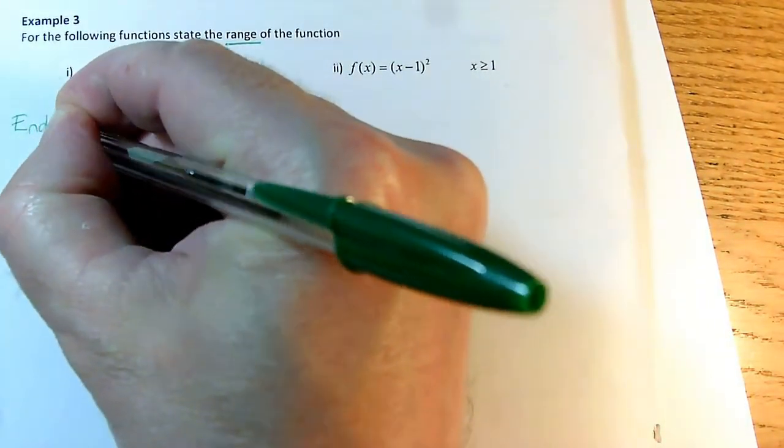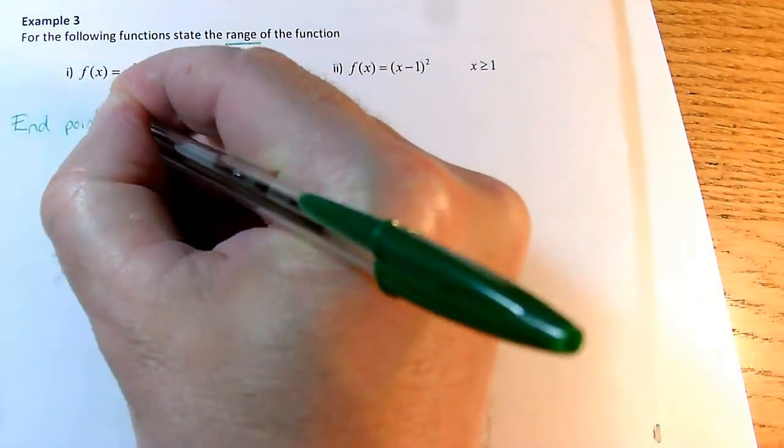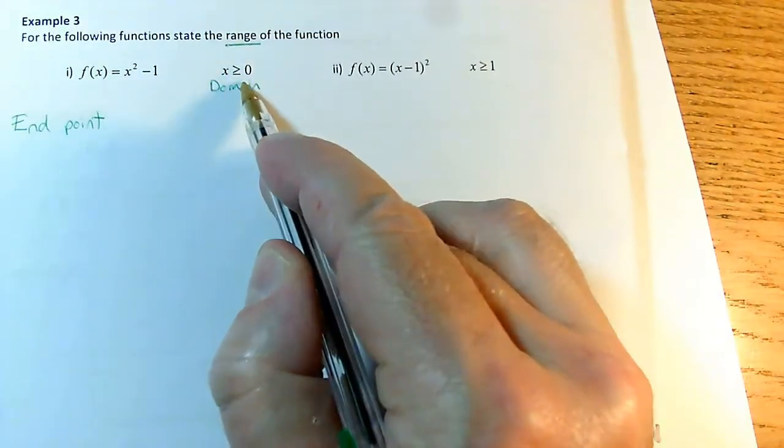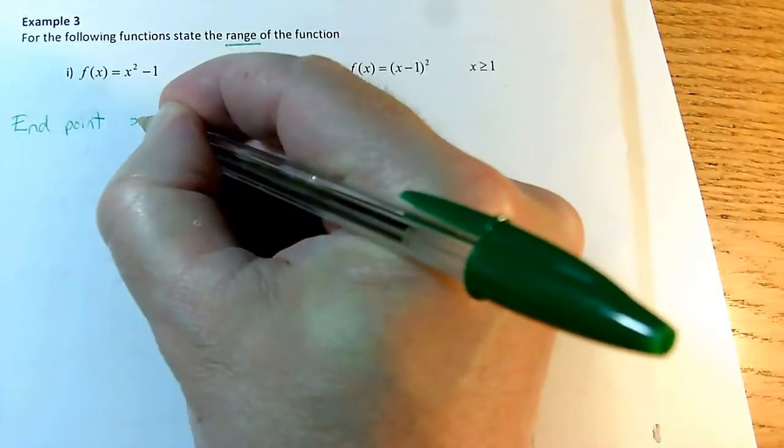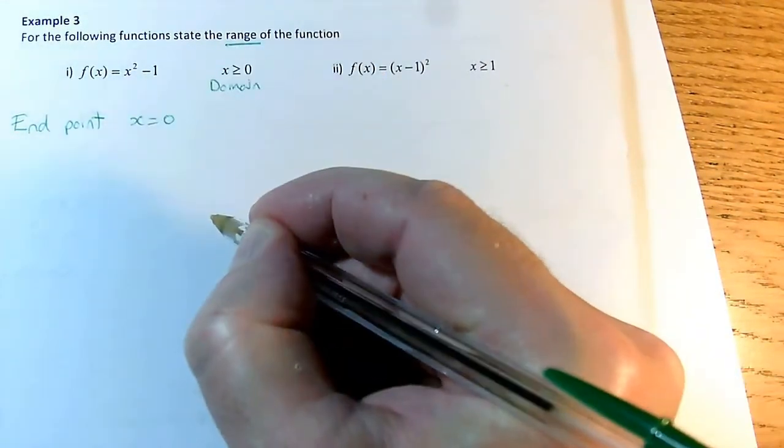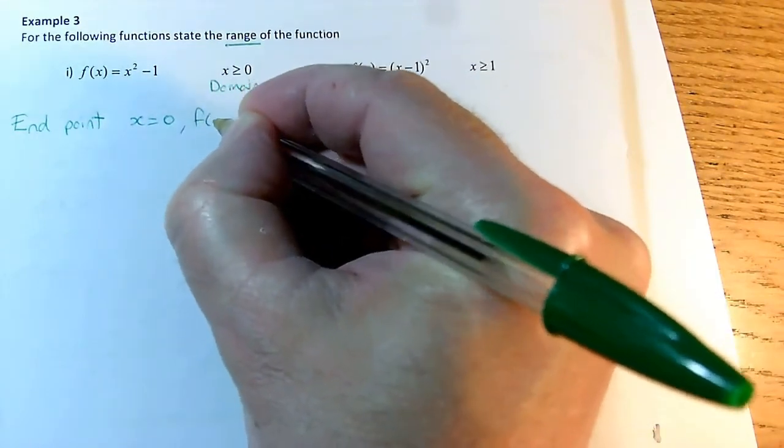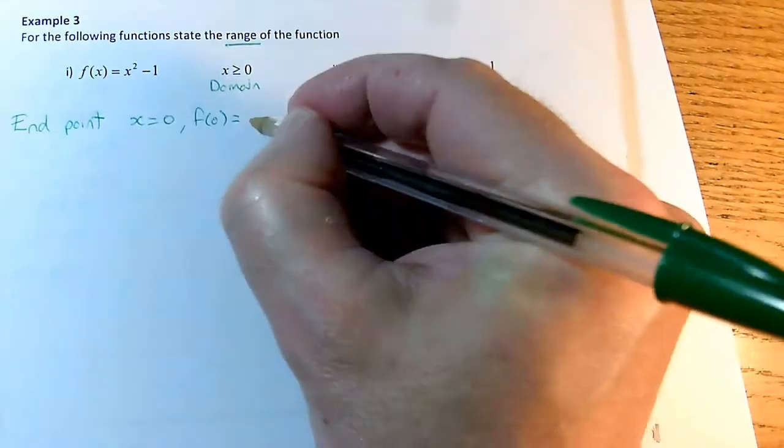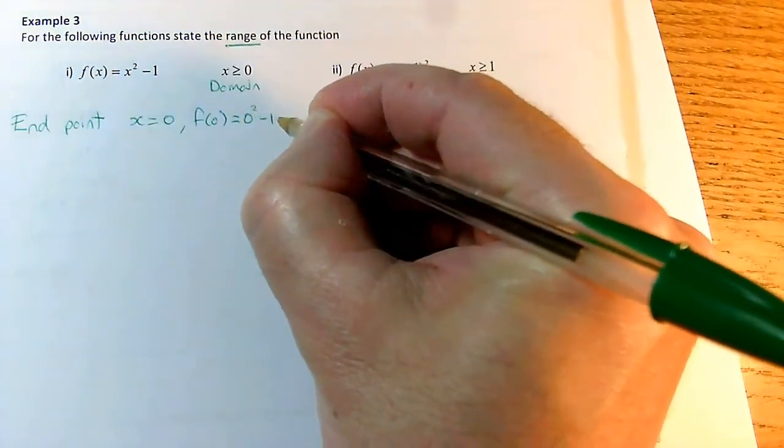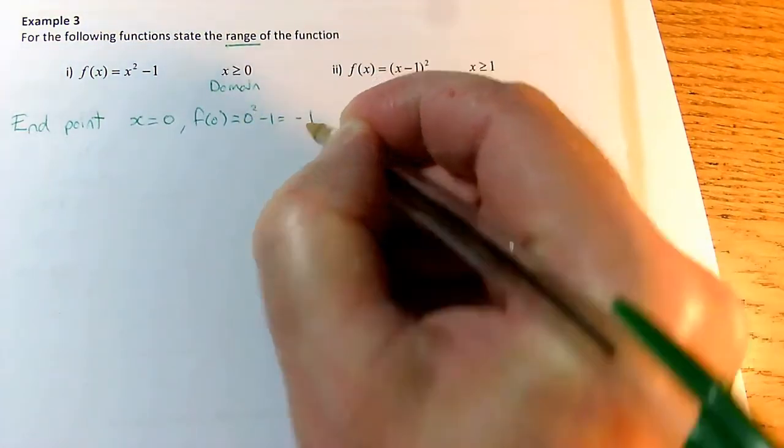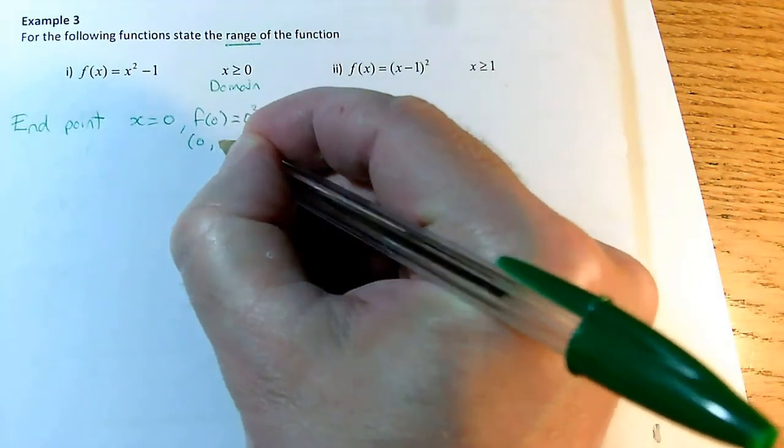So if we start by looking at our endpoint, there's just one here, which is 0. When x is 0, I can work out what f(x) is going to be. So f(0) equals 0 squared minus 1, which is -1. So I've got an endpoint at (0, -1).